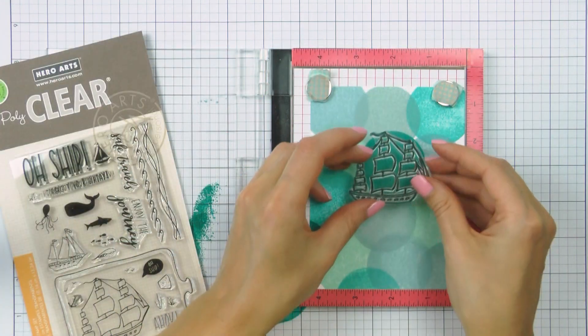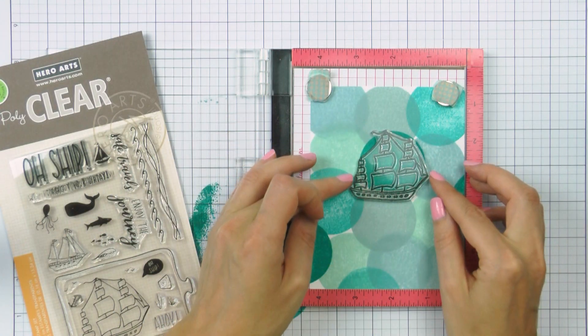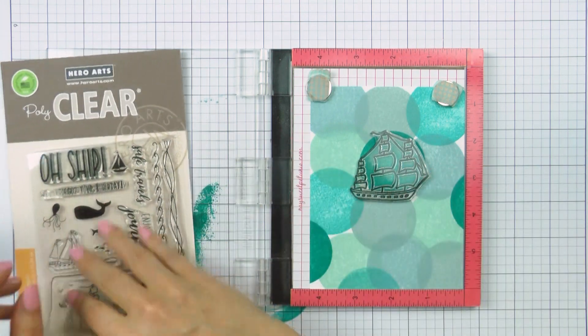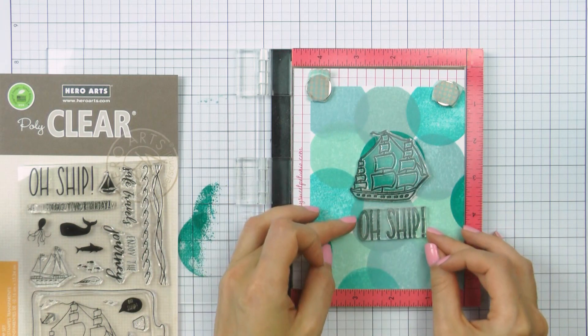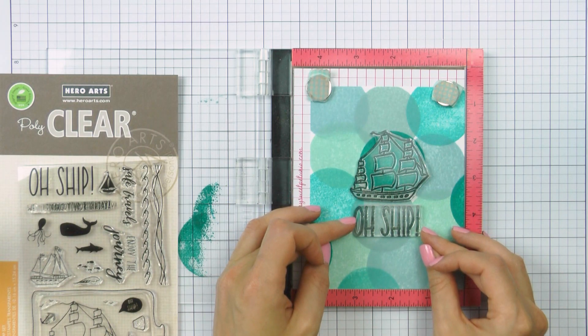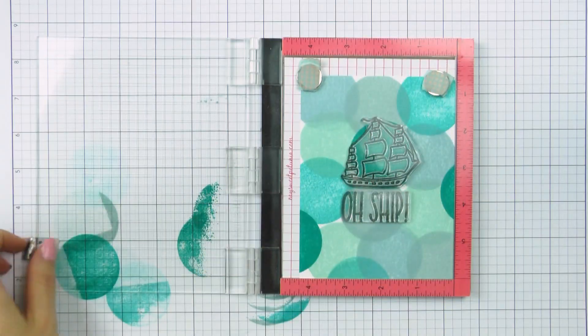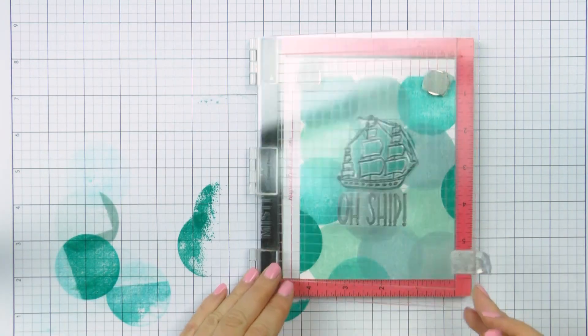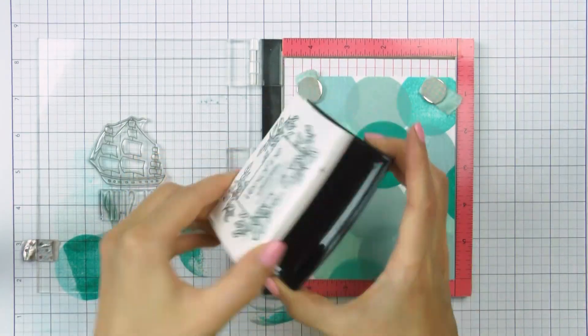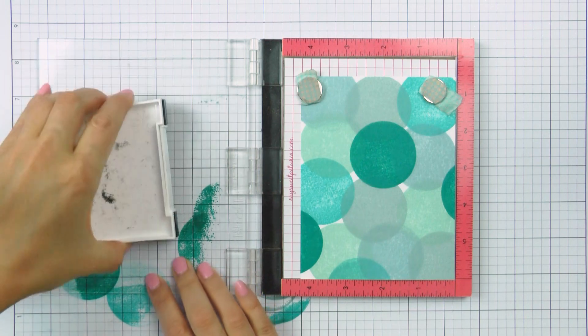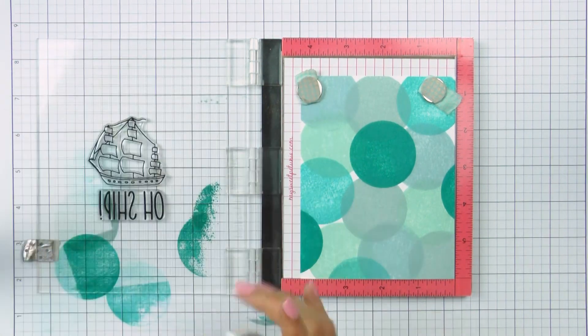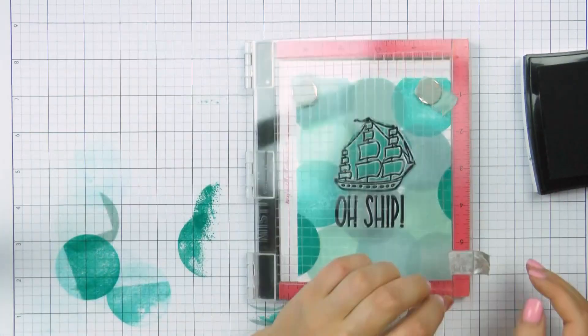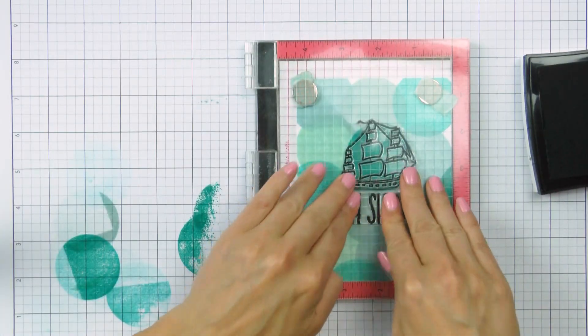Next I'm going to use my mini MISTI and will stamp the ship image. I'm using the larger ship from this stamp set and also the Oh Ship sentiment. I'm trying to have these positioned exactly in the center and I'm stamping them using VersaFine Onyx Black ink. Now I did use my heat tool and dried these panels just a little bit. I had a ton of ink here and I didn't want my black stamping to bleed into the background, so just to be safe I dried them for a few seconds.